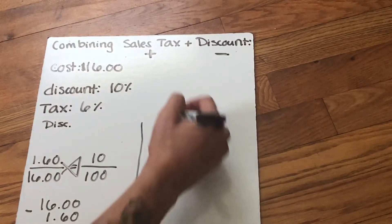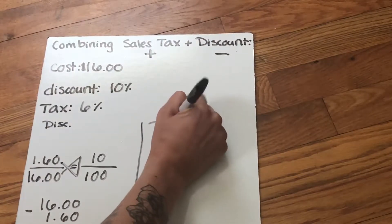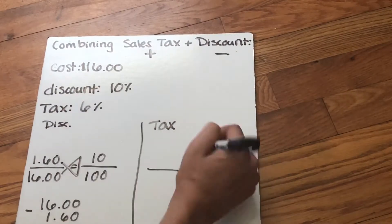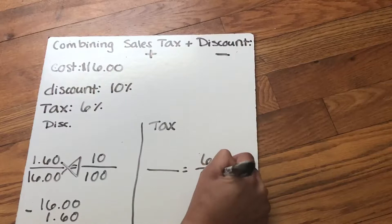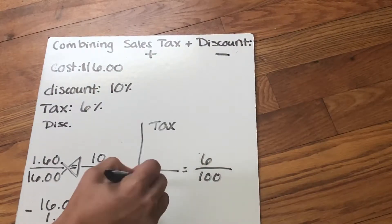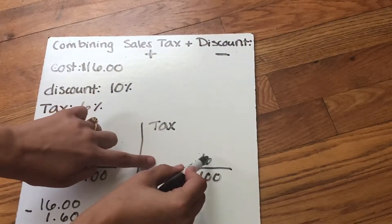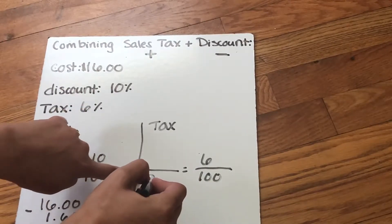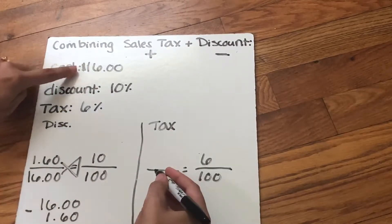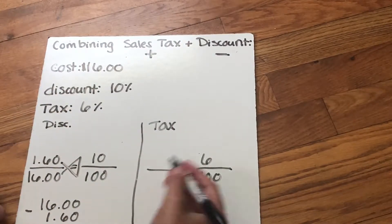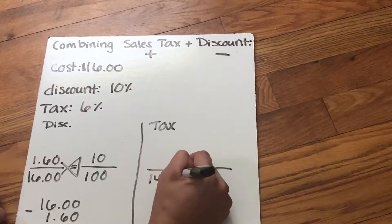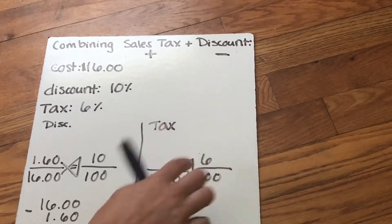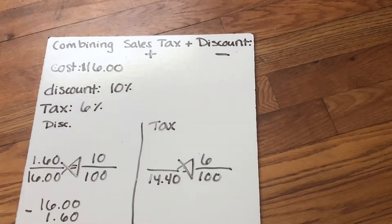So now I'm able to do my tax. I'm gonna set up my skeleton. I'm gonna do my percent, 6% over 100. And then I'm gonna think, okay, so this is the part. This is the 6%, which we don't know yet. We're looking for that. And the whole, what is the whole amount I'm paying for these pencils? Well, it was $16, but now that I have my discount, it's $14.40. That's my new whole. Now I can calculate what the tax on that $14.40 will be.